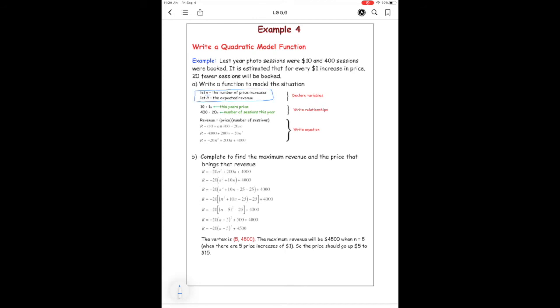So in my example, I just called N, the number of price increases. And I said R is the revenue, because we're trying to generate some revenue. So we set that up. Now, it's quite easy. I always think about money first. So it's $10, and then you're increasing by $1 for every price increase.